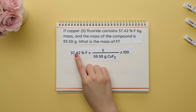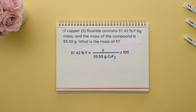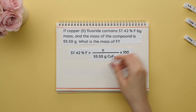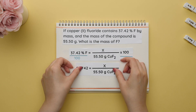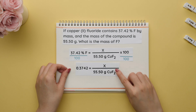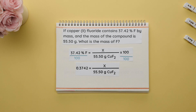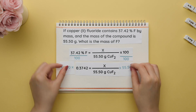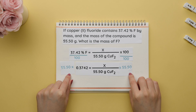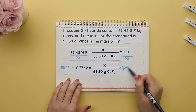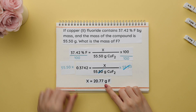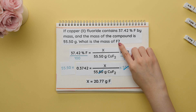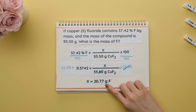The next step is to get rid of the percentage and change it back to decimal form by dividing both sides by 100. Now we can get rid of the denominator to get x by itself, so we multiply both sides by 55.50. These cancel and x equals 20.77, which means the mass of fluorine is 20.77 grams.